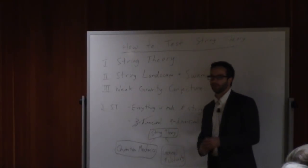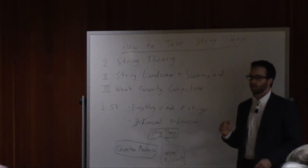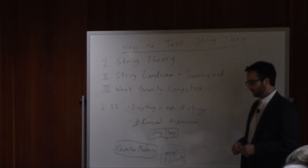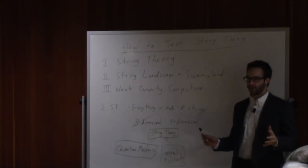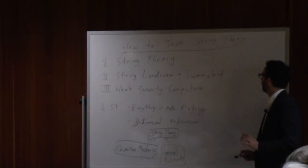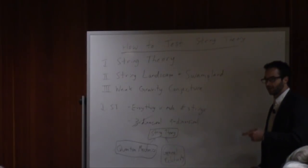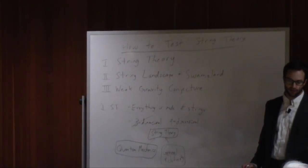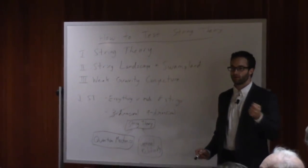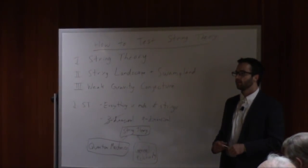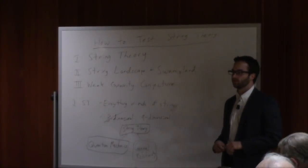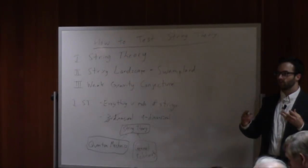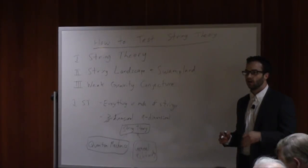String theory's main claim to fame is that it is the only mathematically consistent theory of quantum gravity that we have found so far. So from a mathematical, theoretical perspective, string theory is fantastic. But string theory is also very controversial, and for good reason — because although it has an enormous theoretical framework behind it and is extremely elegant from a mathematical perspective, it does not have any sort of direct experimental evidence. To understand why this is, we need to understand the modern paradigm in physics of scale separation.